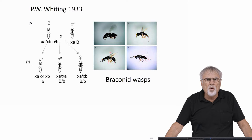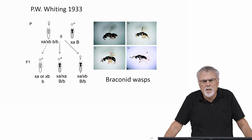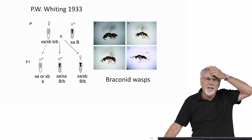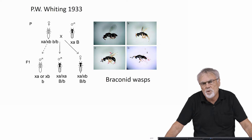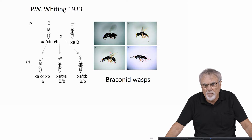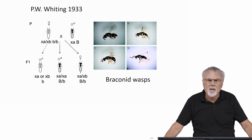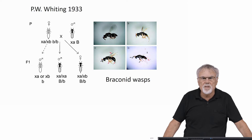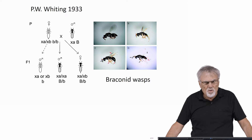In 1933, P.W. Whiting proposed a mechanism whereby one gene is responsible for the determination of sex in braconid wasps, which is what he studied. He found that some of the individuals produced were diploid males. He knew it was haplodiploid, so he expected males would all be haploid — one set of chromosomes — and females would be diploid. But when he started looking closely, he found that in fact some of the males that were produced had two sets of chromosomes.